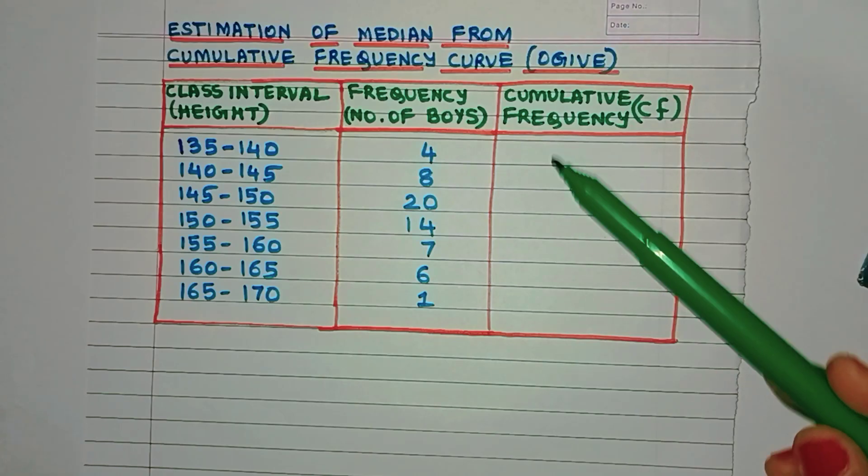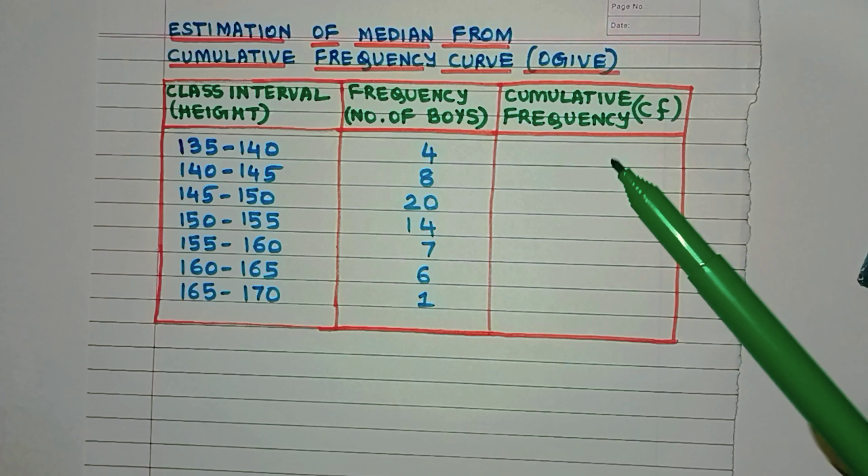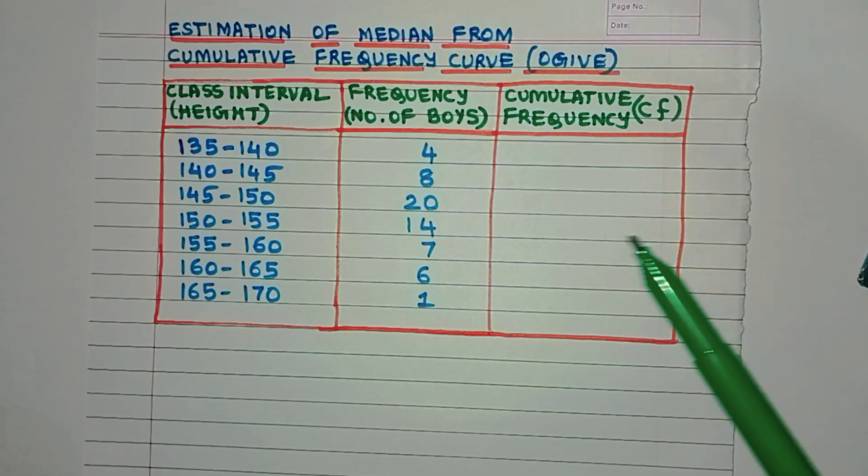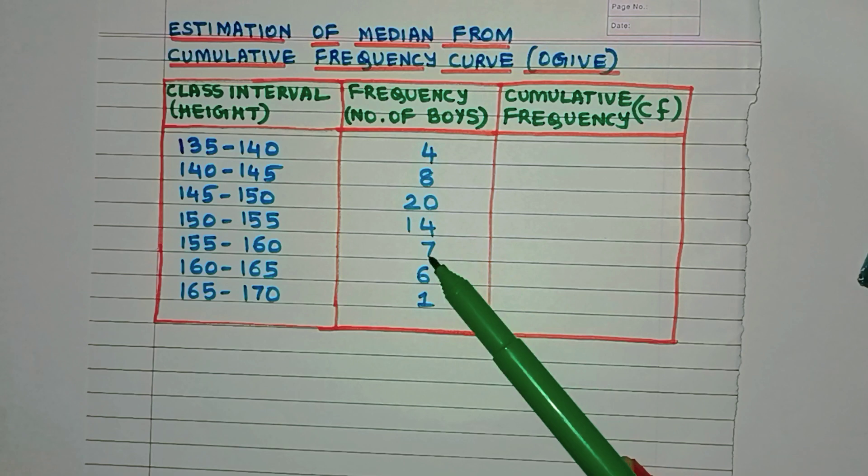Hello everyone, today let's learn how to estimate the value of median from the cumulative frequency curve, also known as ogives. In this example, here is the class interval column and this is the frequency column.